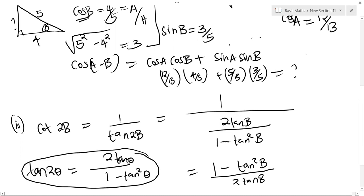But we know that tan is the same as sine over cos. So we can express this as 1 minus sine squared B over cos squared B, all this divided by 2 sine B over cos B.